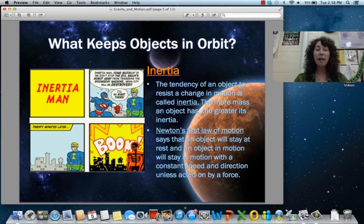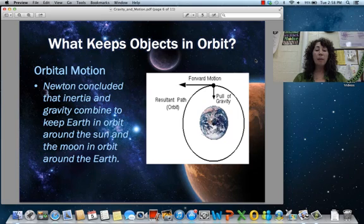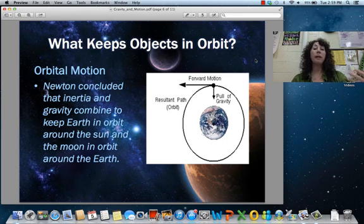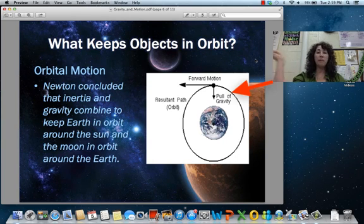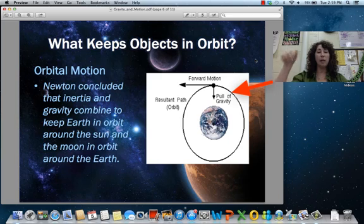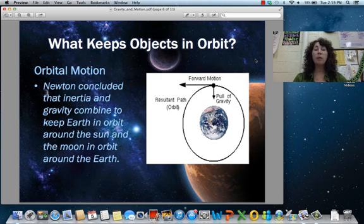So in theory if there wasn't that gravity, if there wasn't that pull of gravity of objects, that forward motion would take over and the planets would just fly off. Think about if you're spinning something around your head and you let go of it. It's going to fly off in a direct path. Same thing would happen but because there is that pull of gravity between the two objects, the two very large masses, they stay in orbit.